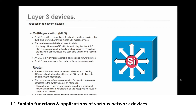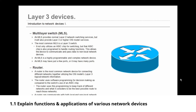Now let's move on to the router. A router is the most common network device for connecting different networks together, utilizing the OSI model's layer three logical network information — that's what makes a router a layer three device. The router uses software programming for decision making, as compared to a switch's use of an ASIC chip. The router uses this programming to keep track of different networks and the best possible route to reach them. A router can communicate with both local and non-local network devices.